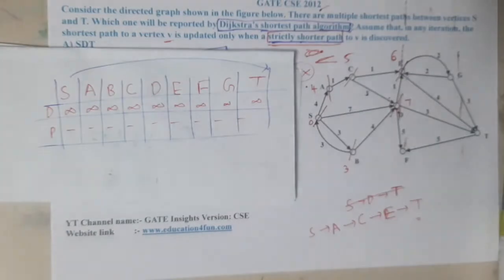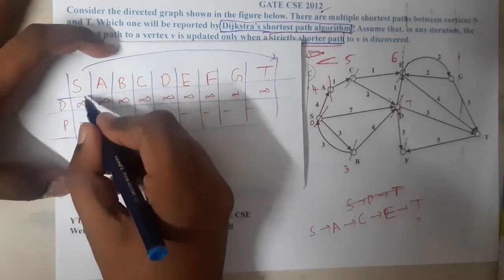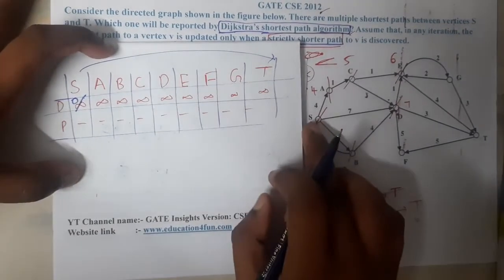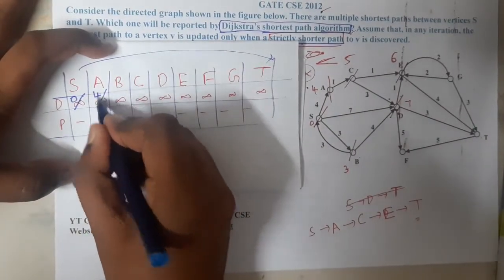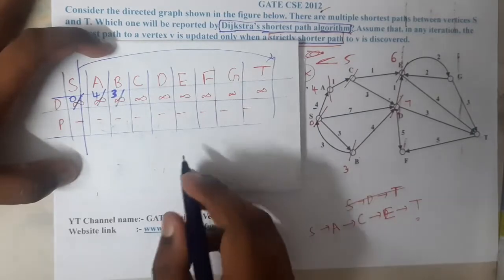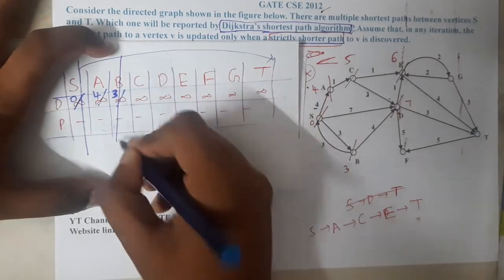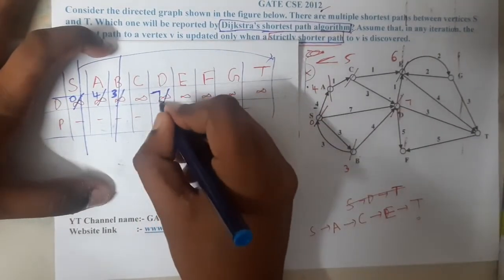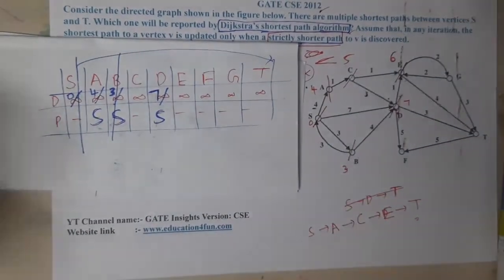Starting at s, the initial distance for s is 0 and there is no parent. From s, we can go to a with cost 4, to b with cost 3, and to d with cost 7. Let us update the parent values accordingly.